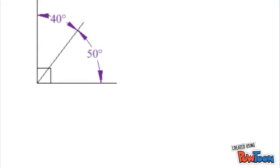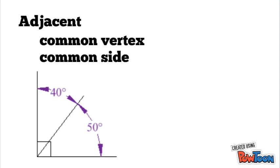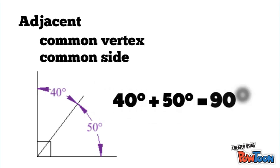As you can see, these angles are adjacent, which means they share a common vertex and a common side. If we add these angles, we obtain 90 degrees, so the two angles are said to be complementary.